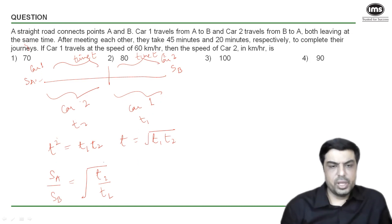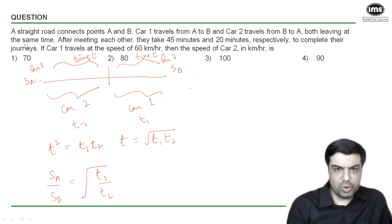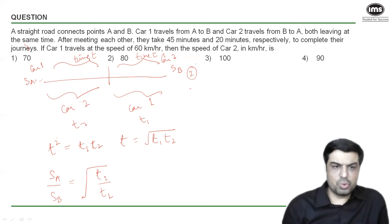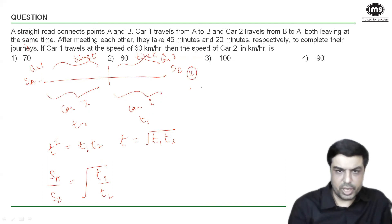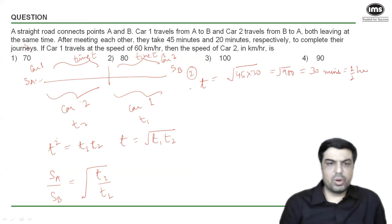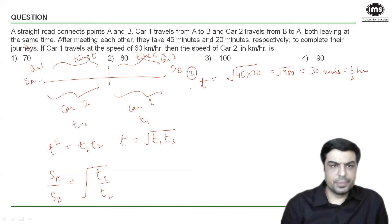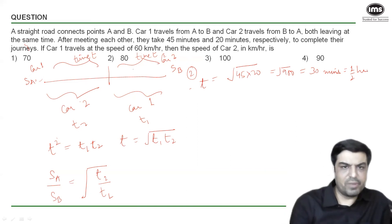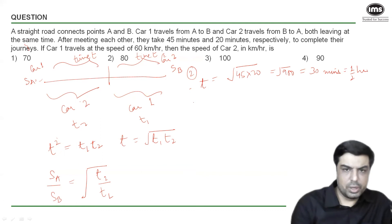Using Method 2 with Formula 1: t1 = 45 minutes, t2 = 20 minutes. So t = √(45 × 20) = √900 = 30 minutes, which is half an hour. Car one travels at 60 km/h, so in half an hour it covers distance AP = 60 × (1/2) = 30 kilometers.